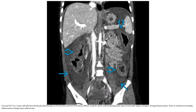Contrast-enhanced CT in a child with fever and bloody diarrhea shows diffuse marked colonic wall thickening with a region of hyper and hypo enhancement, and marked surrounding inflammatory change.